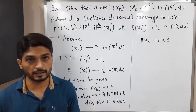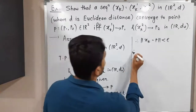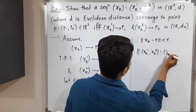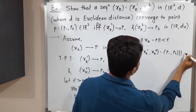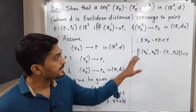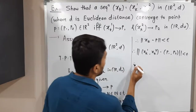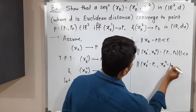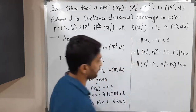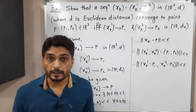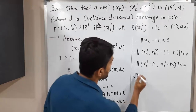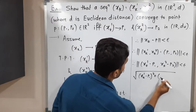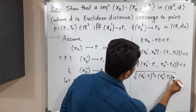Our xk is (xk1, xk2) and p is (p1, p2). Doing the subtraction component by component, we have the norm of (xk1 - p1, xk2 - p2) less than epsilon. By the definition of the norm, this is the square root of (xk1 - p1)² plus (xk2 - p2)², which is less than epsilon.